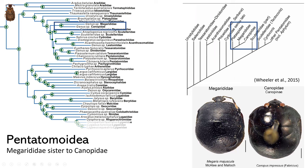We were curious about the relationships between Megarididae and Canopidae, which had not been tested with molecular data given their morphological similarity. And we found that they were sister to each other.